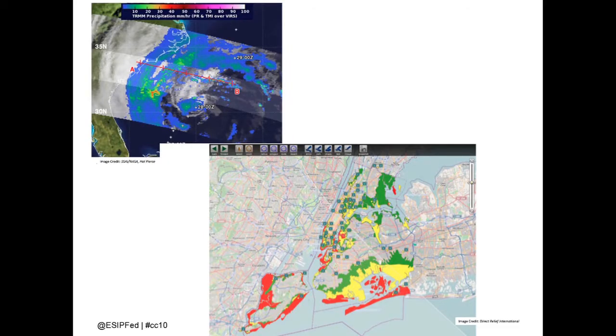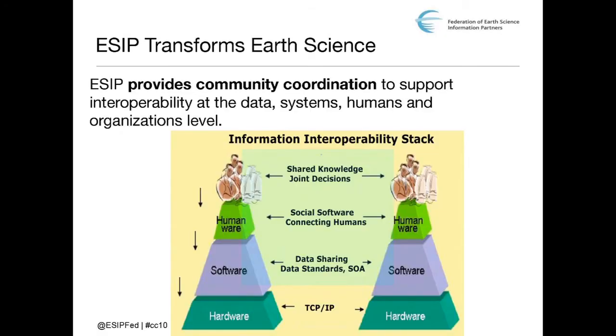This bottom image shows flood zones that have been mapped with hospitals, so that emergency responders can find where hospitals are that haven't been impacted. And ESIP really comes together at the humanware — the connecting people, these pork chop looking things — at the humanware. So they share information.